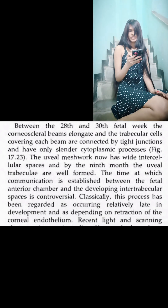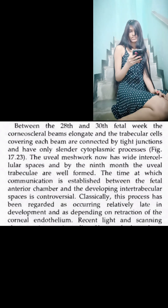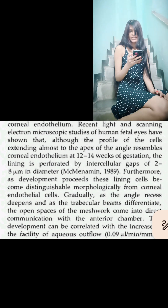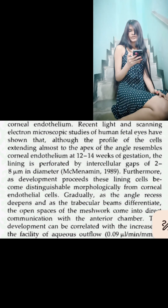The time at which communication is established between the fetal anterior chamber and the developing inter-trabecular spaces is controversial. Classically, this process has been regarded as occurring relatively late in development and as depending on retraction of the corneal endothelium. Recent light and scanning electron microscopic studies of human fetal eyes have shown that, although the profile of the cells extending almost to the apex of the angle resembles corneal endothelium at 12–14 weeks of gestation, the lining is perforated by intercellular gaps of 2–8 micrometres in diameter. Furthermore, as development proceeds, these lining cells become distinguishable morphologically from corneal endothelial cells.